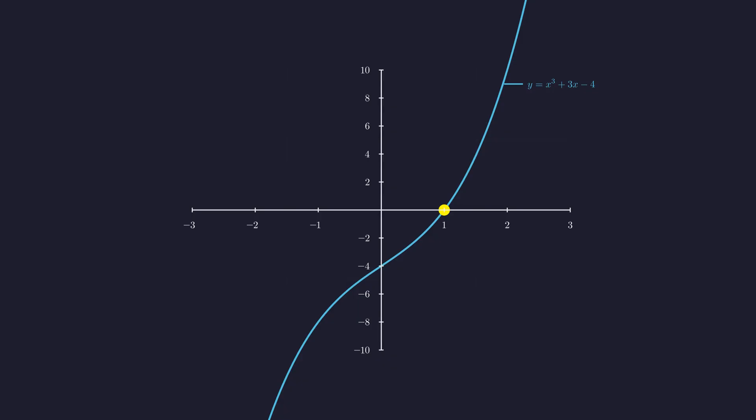And right here at x equals 1, the curve crosses the x-axis. The graph perfectly confirms what we proved algebraically.